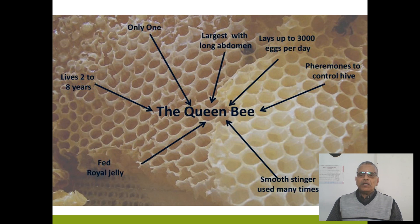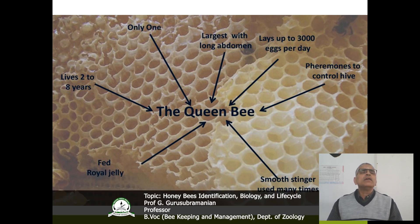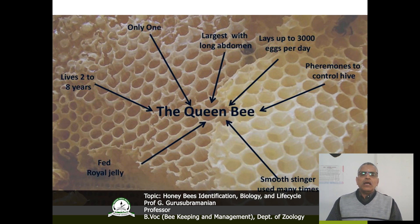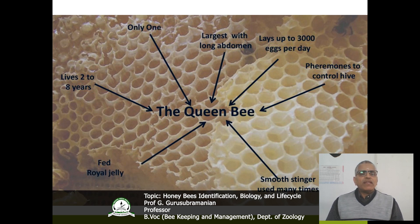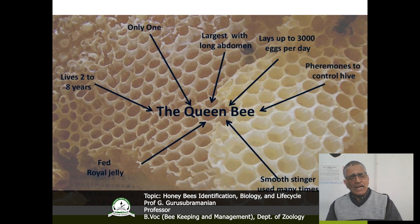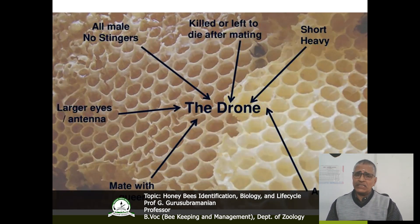Whenever you come to the queen bee, what are all the characteristic features? In a particular bee colony there is only one queen. It lives up to 2 to 8 years, and it is the largest with a long abdomen. Normally it lays up to 3000 eggs per day. With the help of pheromones it controls the whole colony, and normally it feeds on royal jelly.